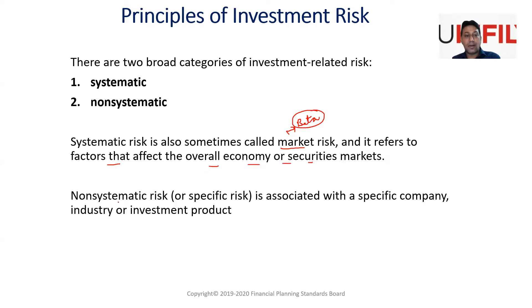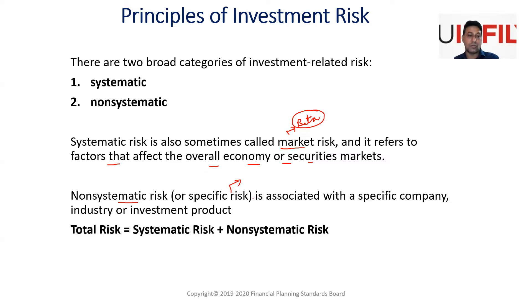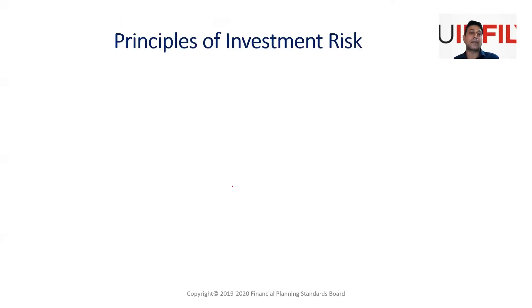Unsystematic risk, or non-systematic risk, is specific to an individual industry or company and can be diversified and reduced. Total risk equals systematic risk plus unsystematic risk. Now let's look at what kinds of systematic risks exist.